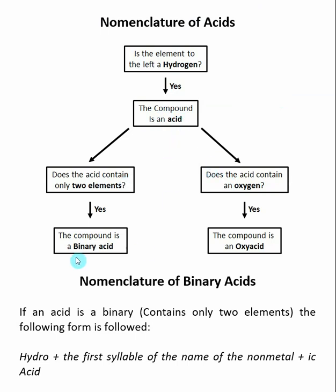The first one is called a binary acid, and I know I have a binary acid when my acid contains only two elements. So we know one of them is already hydrogen. This means it's hydrogen plus one other element. That's why it's called binary — there are actually only two elements involved. So if you see a hydrogen attached to one other element, your compound is a binary acid.